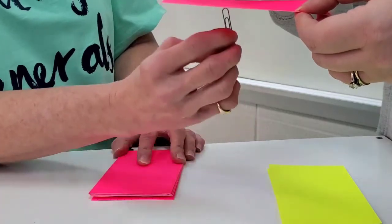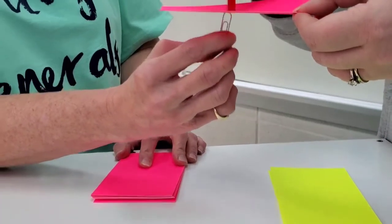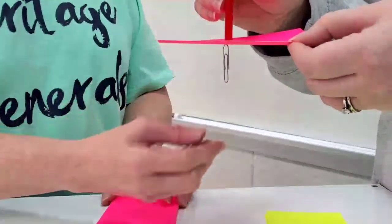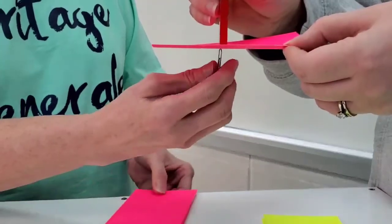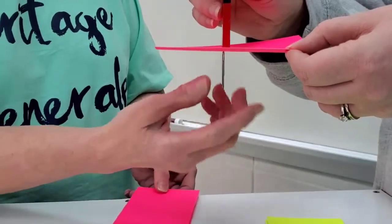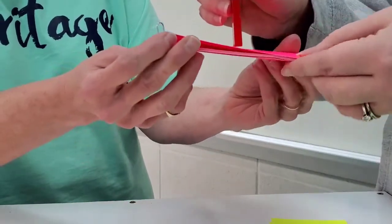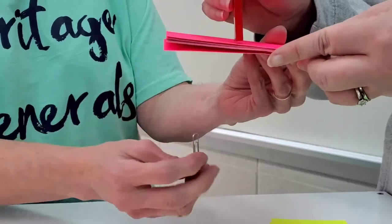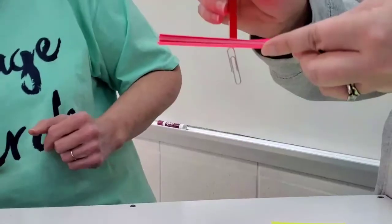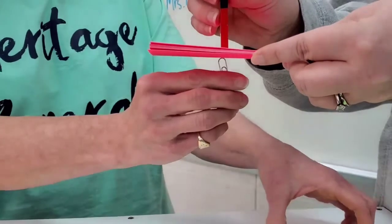Now we're going to look at how distance affects magnetic force. Here we have one index card between the magnet and the paper clip. And now we have eight. Eight! Between the magnet and the paper clip. And it still sticks.